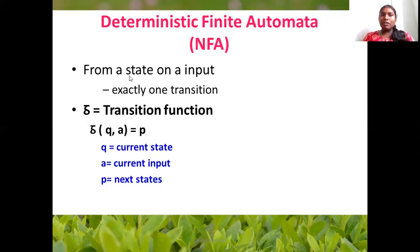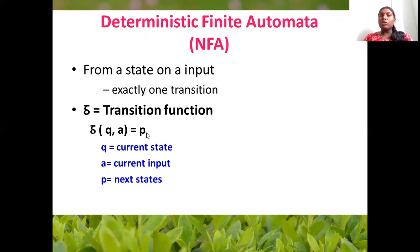From a state, on an input, if there is exactly one transition, it is called Deterministic Finite Automator. The transition function delta of q, on the current input, goes to only one state. If we have exactly one transition — not zero or more — that is DFA. That is the difference between NFA and DFA. Thank you.